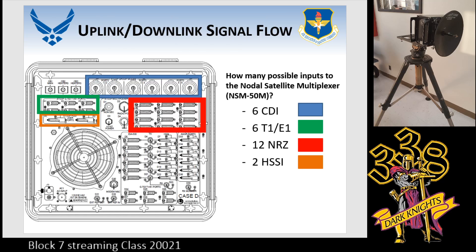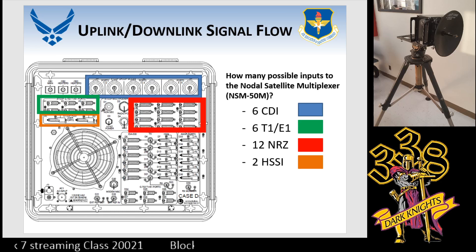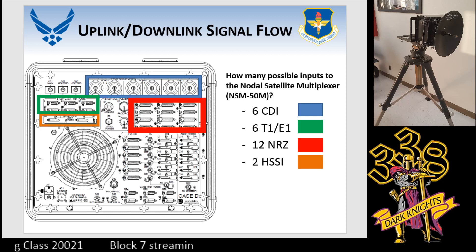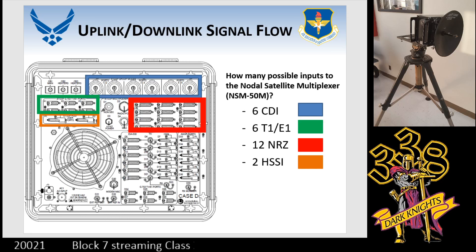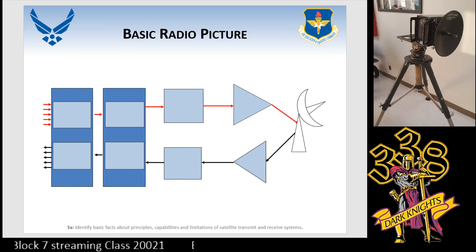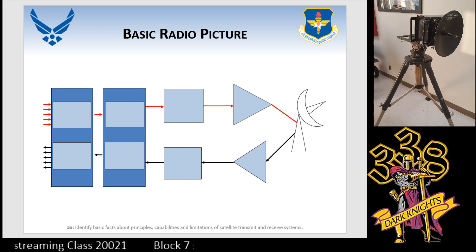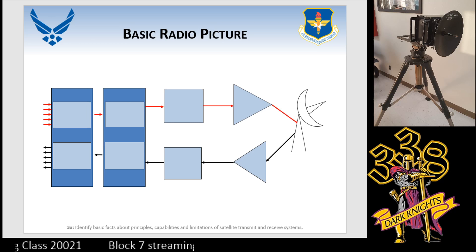This is giving you an idea of what you went over on the NSM lab. We look at how many possible inputs to the nodal satellite multiplexer: six CDI, six T1E1s, twelve NRZ — which is where everybody was putting the HST3000 in — and two HISIs, or high-speed serial interfaces. As you can see here, we have a blank basic radio picture, and apparently you guys do have this particular handout.